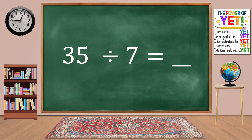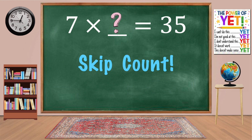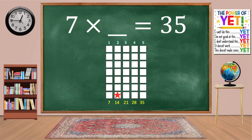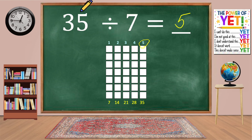35 divided by 7 equals blank. Our related fact is 7 times what equals 35? Skip count: 7, 14, 21, 28, 35. We have five columns. 7 times 5 equals 35. 35 divided by 7 equals 5.